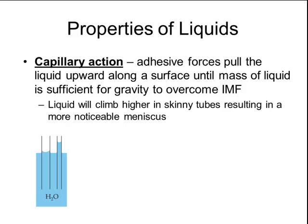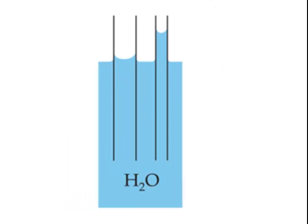If you take a capillary tube and put it down into water, the liquid will climb higher in a skinny tube than it will in a wider tube. This is because the diameter of the tube is smaller, and so you'll need a higher mass to go above the surface of the liquid until gravity prevents it from climbing any higher, whereas in a wider tube, the same mass of liquid won't rise as high.